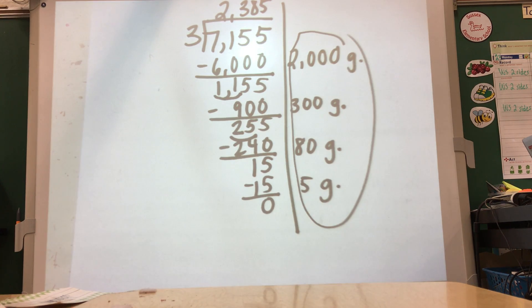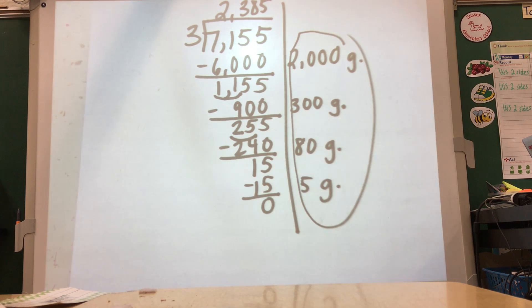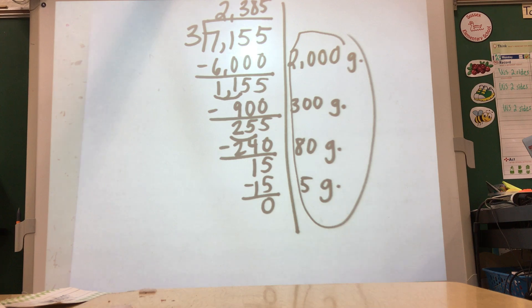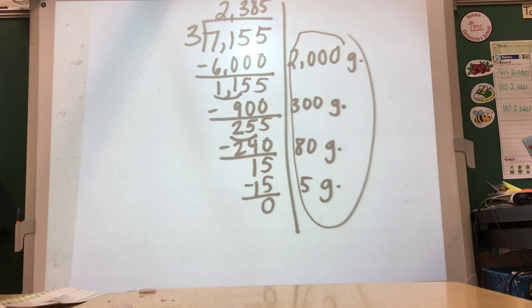So that is how to use area model and partial quotients with longer division problems. Later in the week, we'll look at what happens if it doesn't end in zero — how do you work a remainder into an area model or partial quotients problem? Thanks for watching.